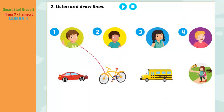B. Two. Listen and draw lines. Look at the pictures. There is one example. One. Hi, everyone! Hi, Tom! Wow, cool bike! Thanks. Tom, how do you go to school? I go to school by bicycle now. Can you see the line? This is an example. Now listen and draw lines.